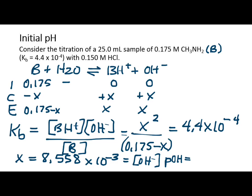So pOH... let me try that again. 8.558 times 10 to the negative third. There, that's better. I got minus 4 the first time. So 2.067 is the pOH. So pH is 14 minus that, and we get 11.93.